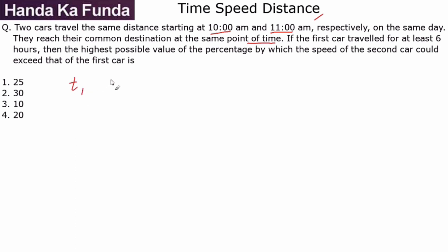If the time taken by them were t₁ and t₂, then t₂ is nothing else but t₁ minus 1. Why is it so? Because the second car started one hour late.